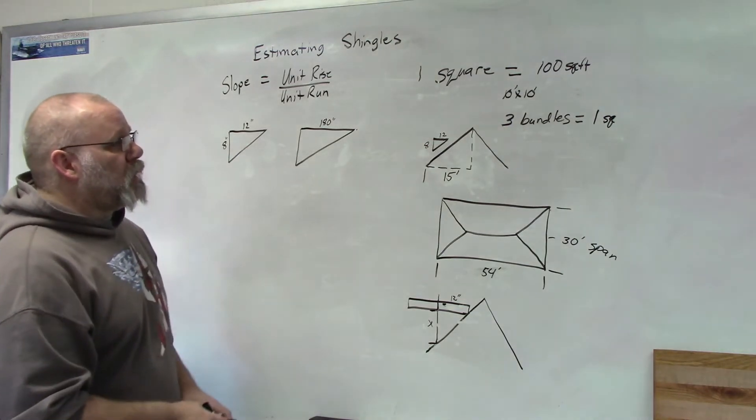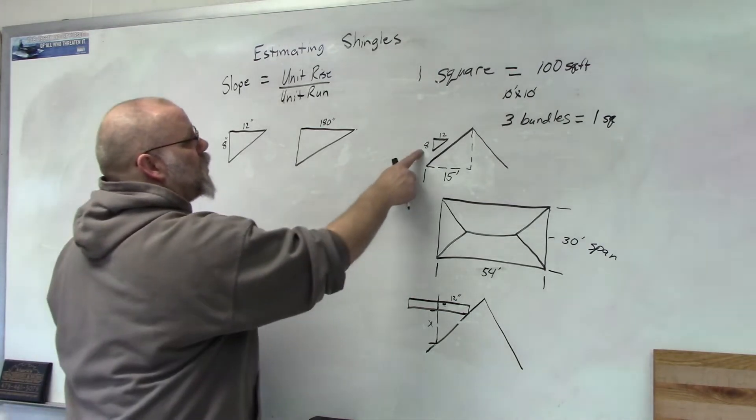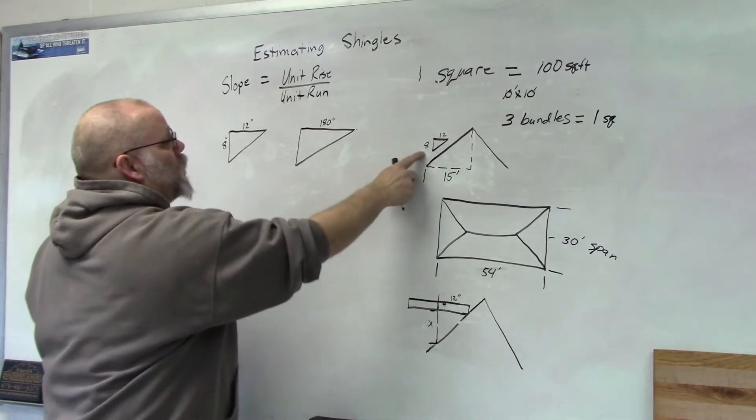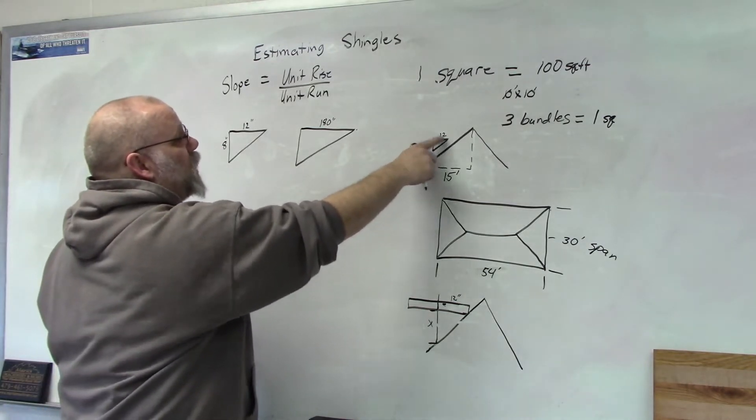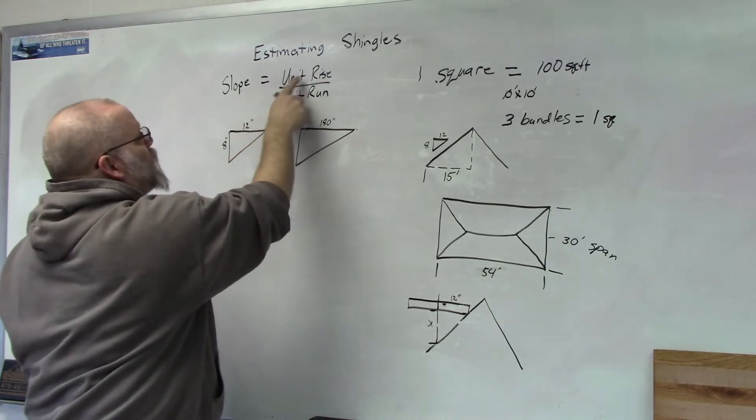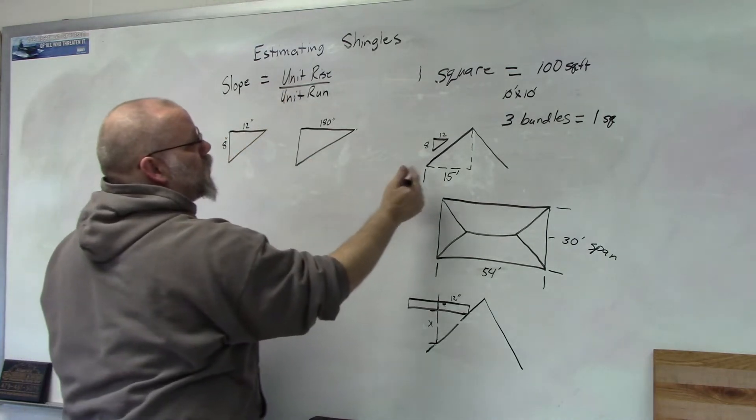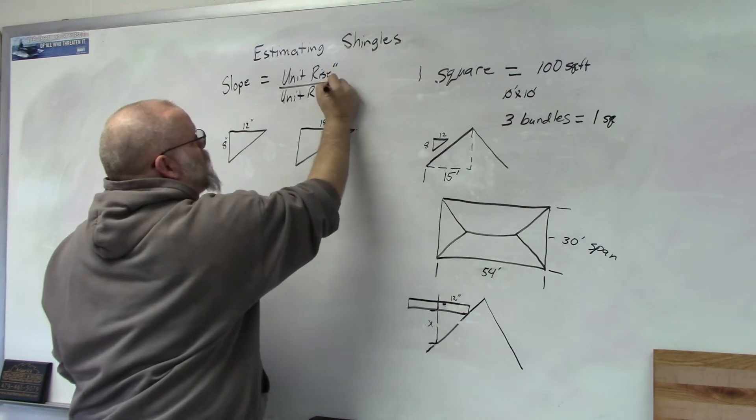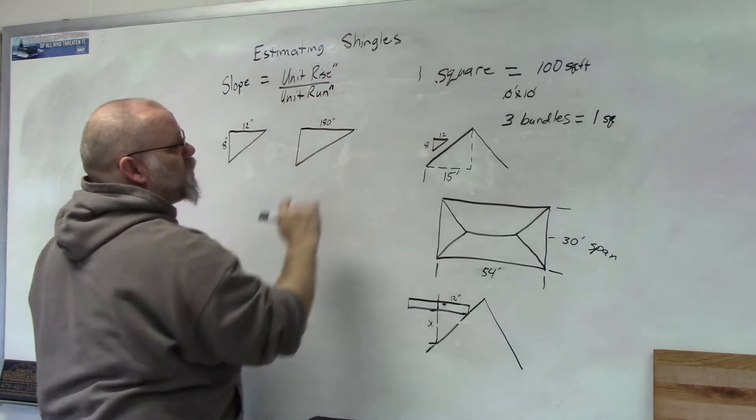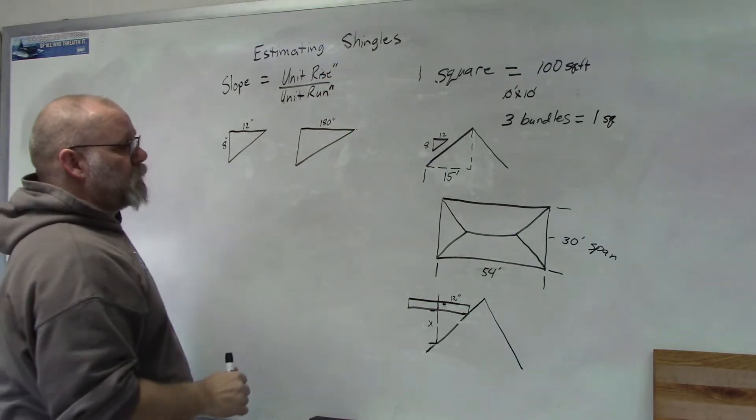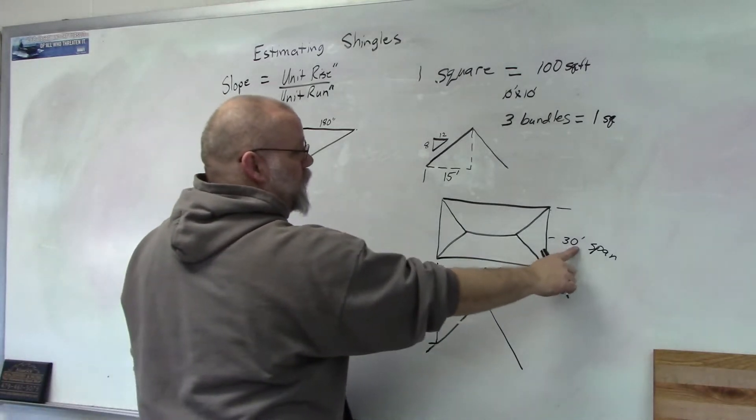Next, you need to know what the slope is. I gave a slope of 8 over 12, so slope is the unit rise over the unit run. These are in inches, so this is 8 inches and that's 12 inches. I gave the span of the building as 30 feet and a length of 54 feet.